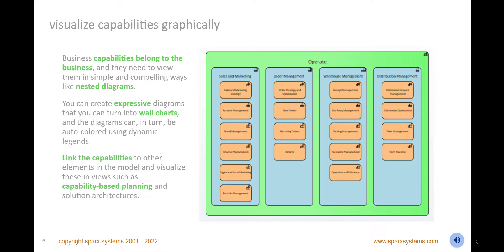Visualize capabilities graphically in diagrams, and print them as wall charts using nesting to show their hierarchy. Use dynamic legends to color them based on metadata and system and user defined properties. Create relationships between capabilities and other modeling elements such as motivation concepts including drivers and goals, and business and application elements such as functions, processes, and application components.